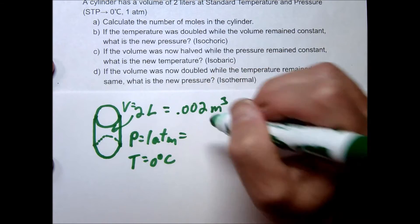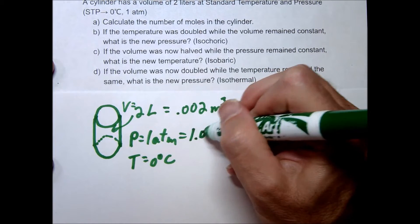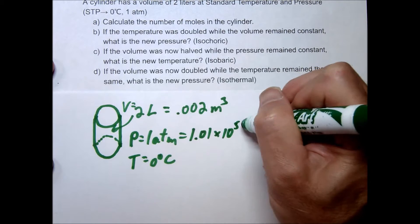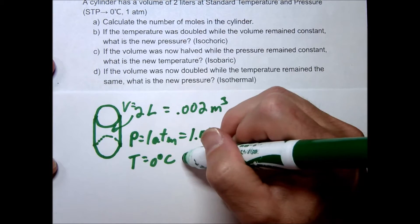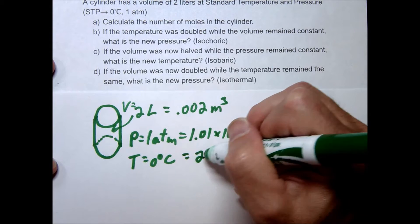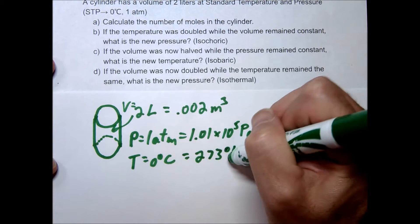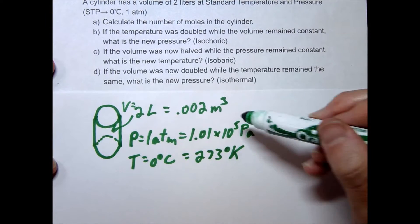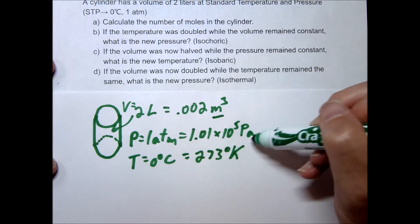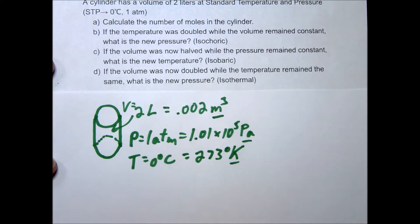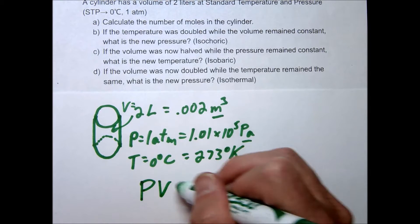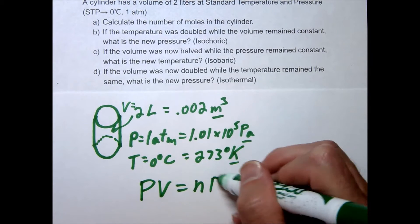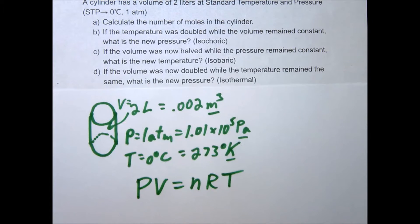They gave us 2 liters, which converts to 0.002 meters cubed. They gave us 1 atm, and 1 atm equals 1.01 times 10 to the 5th pascals. They gave us Celsius — remember 0 degrees Celsius equals 273 kelvins. Make sure you're in standard units before solving. To find the number of moles, we use the ideal gas law: PV = nRT.